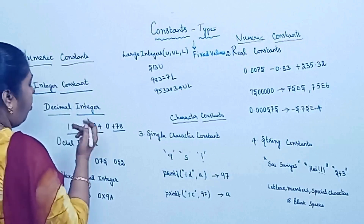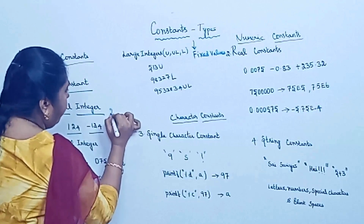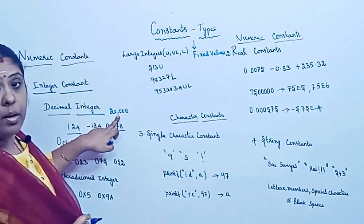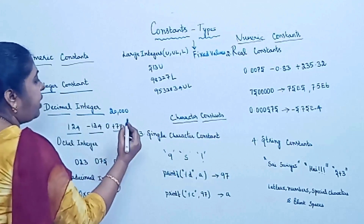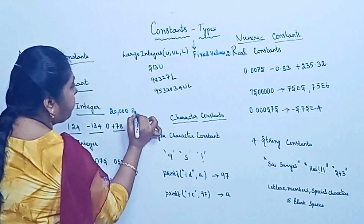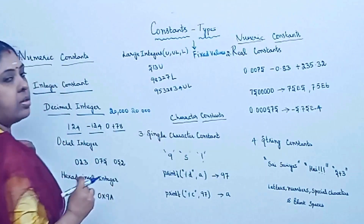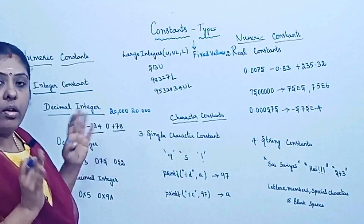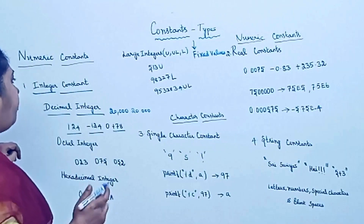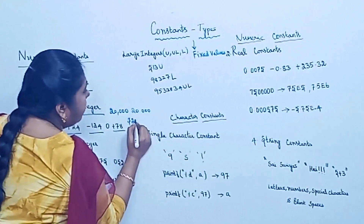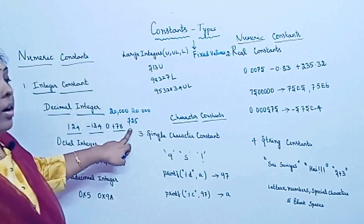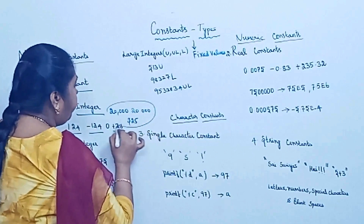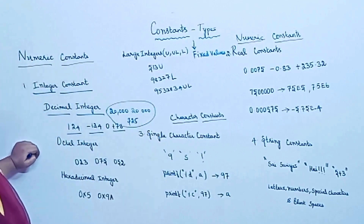Now consider 20,000 written with a comma — commas are not allowed. Similarly, writing 20 with a blank space followed by three zeros is also not allowed. White space or blank spaces are not allowed in integer constants. Special symbols are also not allowed — for example, $25 where $ is a special symbol. These are all invalid decimal integers.